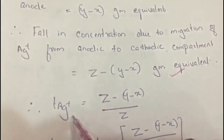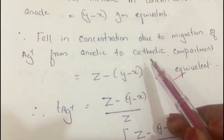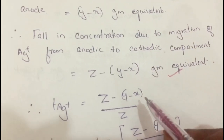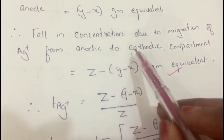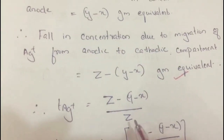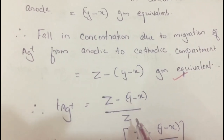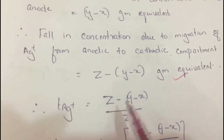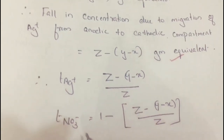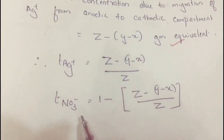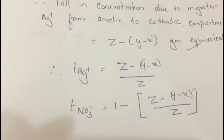Transport number of Ag+: T(Ag+) equals fall in concentration at the anodic compartment divided by number of gram equivalents of copper deposited in the copper coulometer, giving T(Ag+) = [Z − (Y − X)] / Z. Transport number of NO3−: T(NO3−) = 1 − [Z − (Y − X)] / Z.